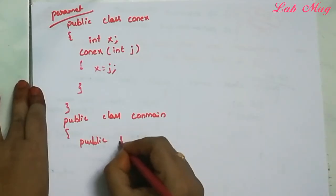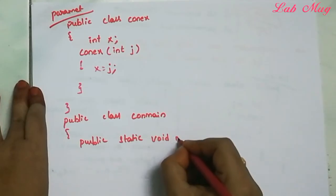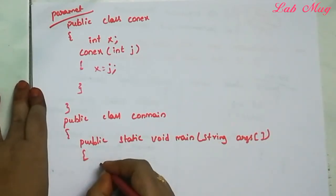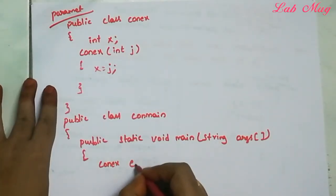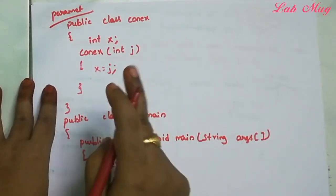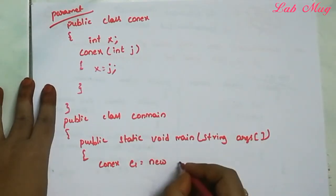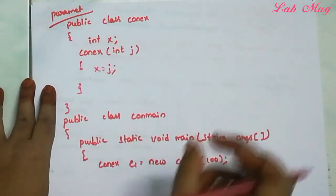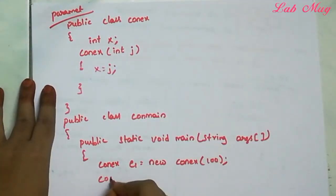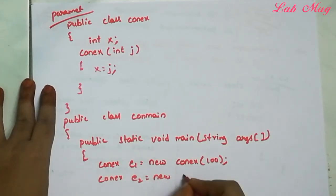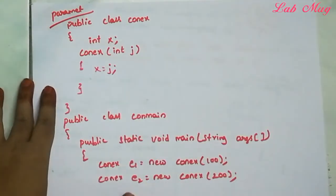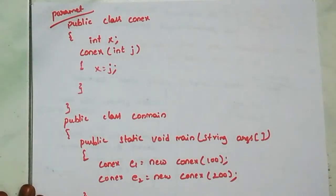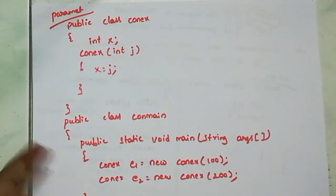In the main class, public static void main(String[] args), we create an object: e1 = new Conx(100). Now the constructor is invoked with 100 passed to j, and x gets the value 100. We create another object: e2 = new Conx(200), so x gets 200. We then print using System.out.println. Finally, we close the main method and the class.